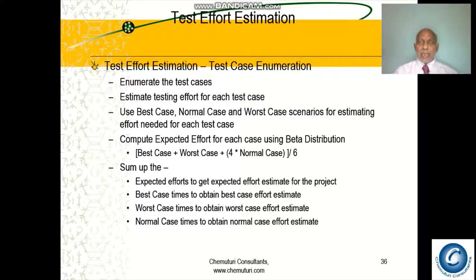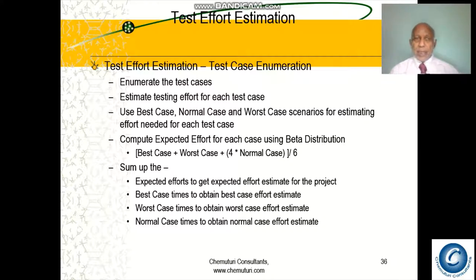The second method is test case enumeration. In most organizations, software testing is carried out using test cases designed earlier. In this approach, we enumerate the test cases and estimate the testing effort required for each test case. Some organizations conduct testing based on intuition or guidelines without documenting test cases, which suffices in many cases. But where test cases are documented and used in testing, this method becomes very useful — we simply list all the test cases and derive the testing effort for each.